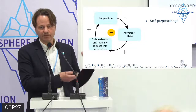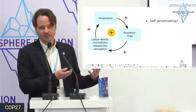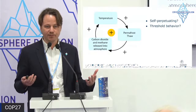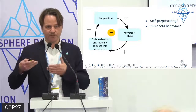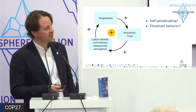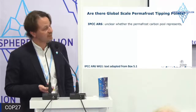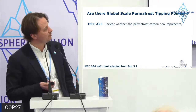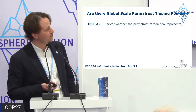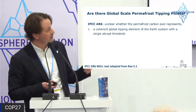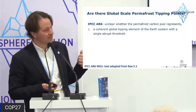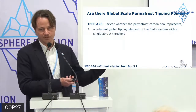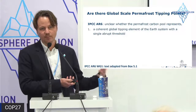The question is: is this self-perpetuating? It's clearly self-reinforcing, but self-perpetuating would mean it emits enough carbon to actually perpetuate itself without further external forcing. The second question is: do we have threshold behavior in the permafrost carbon feedback — are there specific temperatures where we would see abrupt thresholds? The IPCC stated it's unclear whether the permafrost carbon pool represents a coherent global tipping element with a single abrupt threshold.